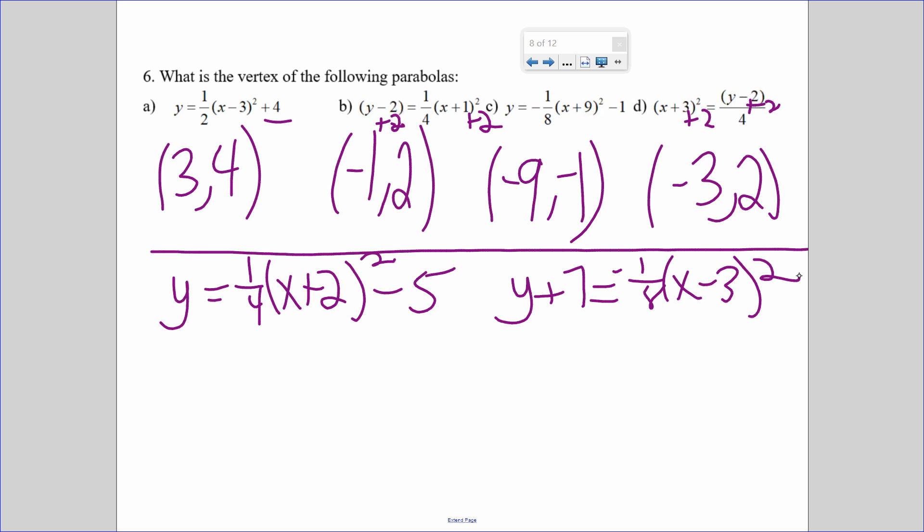So, I want you to try on your own right now. I want you to just pull the vertex out of each of these. I'll give you about 15 seconds. I want you, given those equations, to tell me what the vertex would be. If y is by itself, negate the x, keep the y value. If y is not by itself, we're still negating the x. But, if I get y by itself, I would have to subtract that 7, so it would become negative.